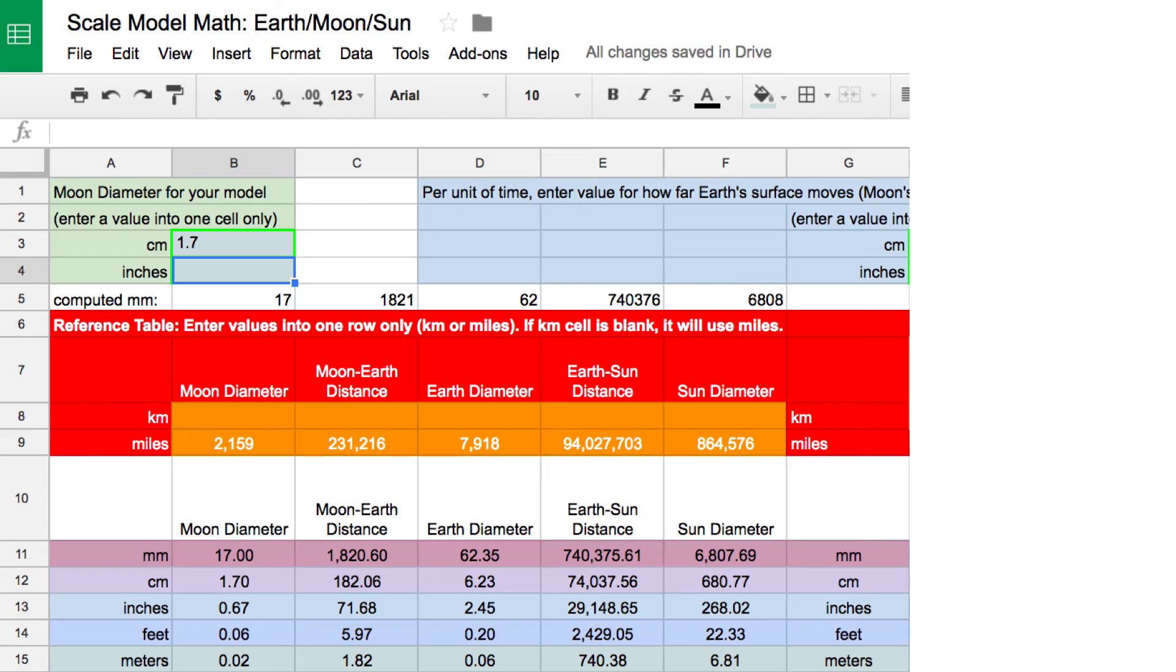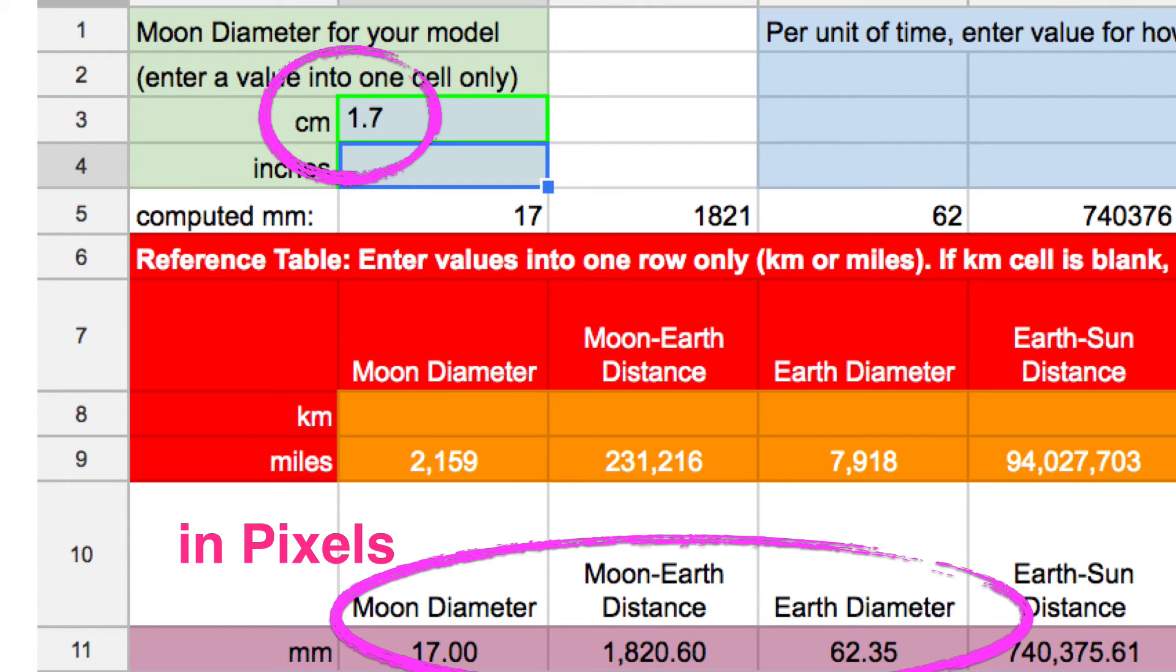And if you go to that video, there's a link to this spreadsheet where you can type in various sizes for the moon. And it will calculate everything else for you. And what we're going to do is focus in on the Earth-Moon distance. Now I wanted this to fit on my monitor. My monitor is about 1900 pixels wide. So I just kept typing in moon diameters until I had something that was pretty close to 1900. I wanted it to be a little less so the diagram would fit on the screen. So I ended up with 1.7 centimeters, or I'm going to call that 17 pixels, diameter for the moon. The moon-Earth distance is 1800 pixels, and then the Earth diameter is 62 pixels.